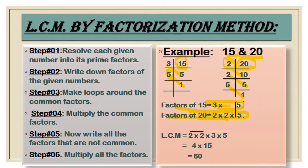Write down all the factors: factors of 15 = 3 × 5, and factors of 20 = 2 × 2 × 5. Make a loop around the common factor. Write down the common factor first — we have only 5 here. Then write all the factors that are not common. After that, multiply all the factors. The LCM is 60, which is the product of all prime factors including the common factors used only once.